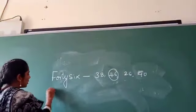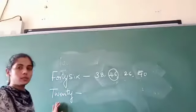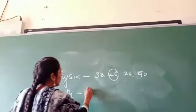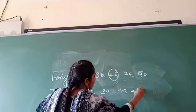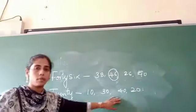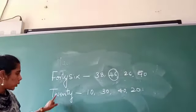Like, twenty. If I say twenty, twenty, how should I write? You know already twenty. Okay. Ten, thirty, forty, twenty. Okay. Among this group of numbers.